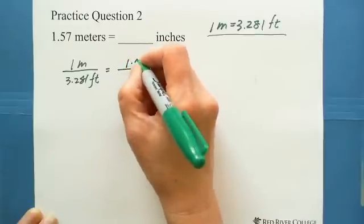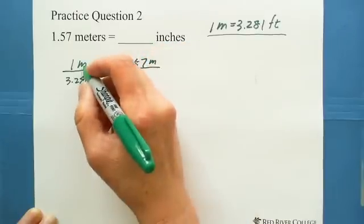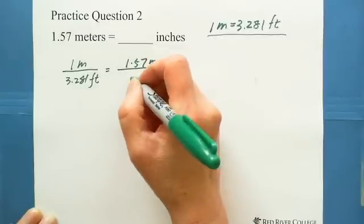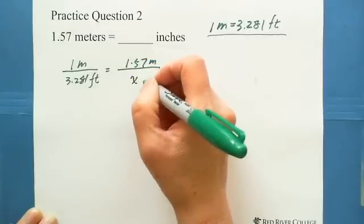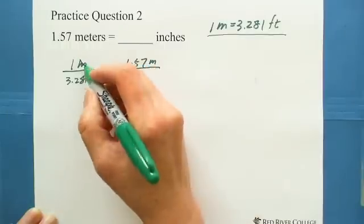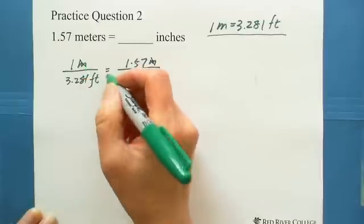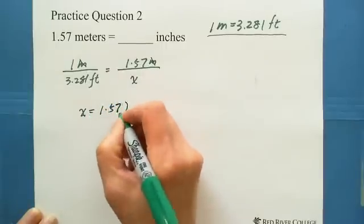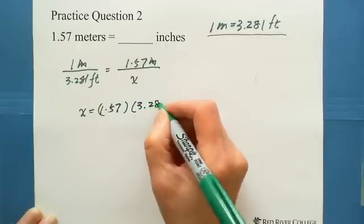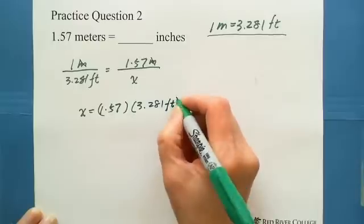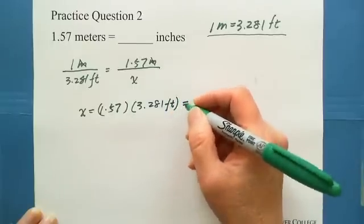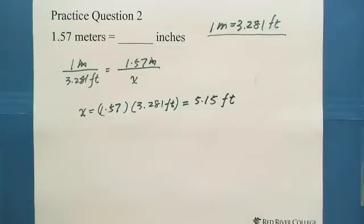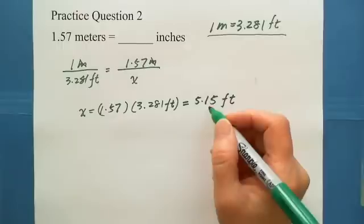The first step, we try to set up 1 meter over 3.281 feet. Now we have 1.57 meters, because meter on the top, the other side meter on the top as well. Now we're looking for equals how many feet? Meter meter cancels out. So we have cross multiplication, 1 multiplied x equals x equals 1.57 multiplied 3.281. We got answer is 5.15 feet.